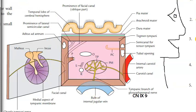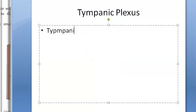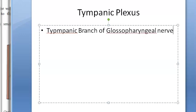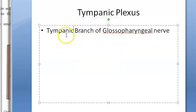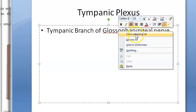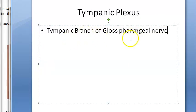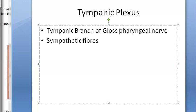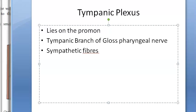From the textbook: the tympanic plexus lies on the promontory. It is formed by two components: number one, the tympanic branch of the glossopharyngeal nerve, and number two, sympathetic fibers. These form a plexus around the internal carotid artery.